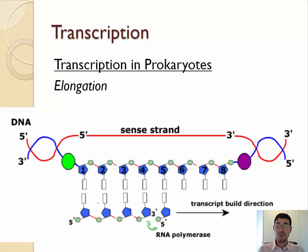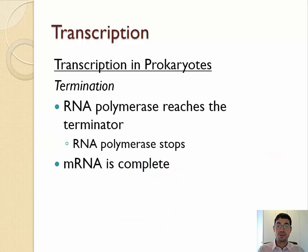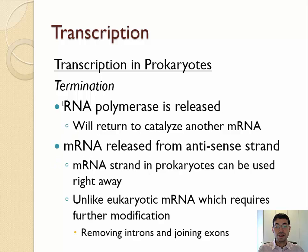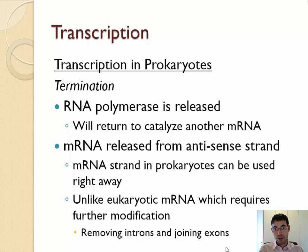In termination, the RNA polymerase reaches the terminator region and stops. Now the mRNA is complete, which means the RNA polymerase will pop off the DNA and the mRNA is released from the antisense strand, eventually floating out of the nucleus to be read by ribosomes in translation. Note that in prokaryotes, this mRNA is ready to go — prokaryotes do not have introns and exons. But in eukaryotes, those introns will need to be removed.